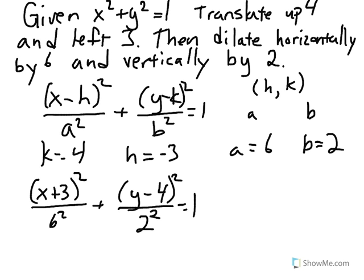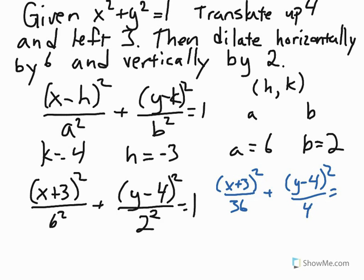And then we can simplify the 6 squared and 2 squared, so we get our final answer of the quantity of x plus 3 squared divided by 36 plus the quantity of y minus 4 squared divided by 4 equals 1.